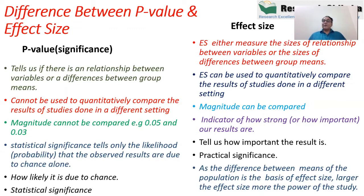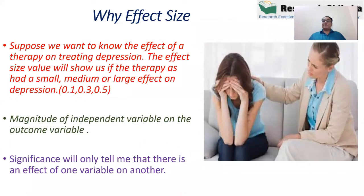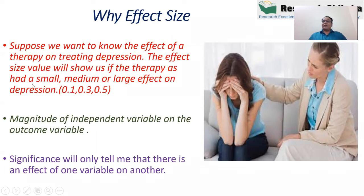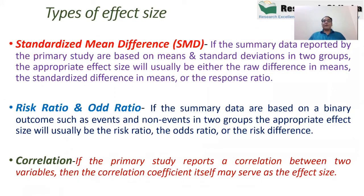If you have 10 studies you have to calculate 10 effect sizes — 10 true values. From all these effect sizes we can find out the population value. For example, if we want to know the effect of a therapy on treating depression, the p-value will only tell us whether it is significant or not, but the effect size will tell us whether the therapy had a small, medium, or large effect on depression — the magnitude of the independent variable on the outcome.